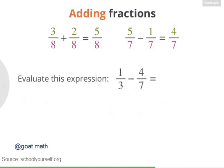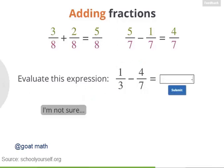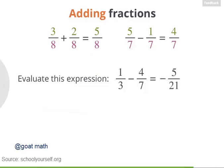Next, try evaluating this expression: 1 third minus 4 sevenths. And if you get stuck, just click over here. Excellent! 1 third minus 4 sevenths equals negative 5 twenty-firsts. And it makes sense that this answer is negative because you're taking a smaller number, 1 third, and subtracting a bigger number, 4 sevenths. That will always give you a negative answer.